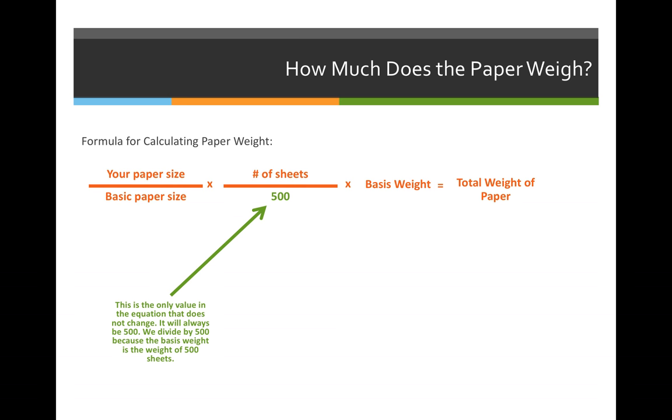To review, the paperweight formula consists of three columns. The first column, we're going to multiply our paper size. This is the size of paper that we are purchasing. So it doesn't always have to be the size we're running on press, but for all of our examples, our PSS, or press sheet size, will also be the size of the paper that we are purchasing.